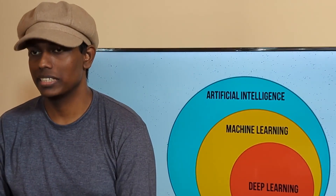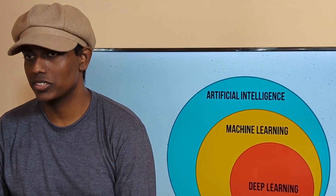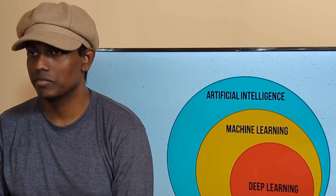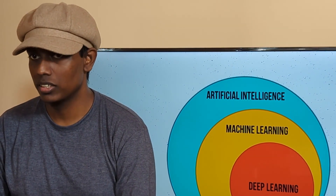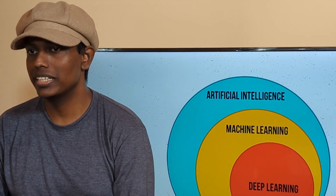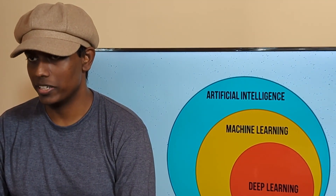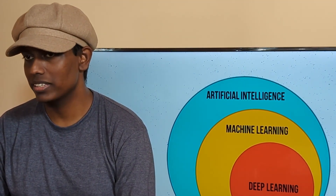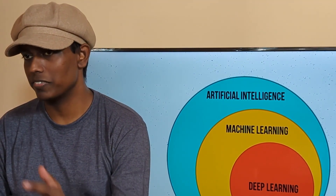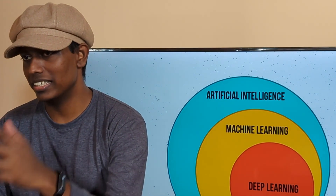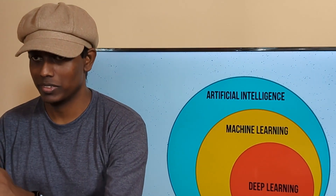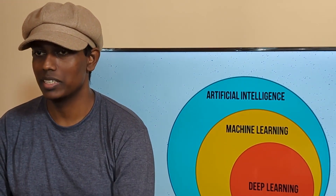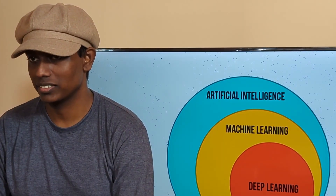AI is an umbrella term that refers to a broad field which focuses on developing machines to mimic human intelligence and behavior. ML is a subcategory of AI and DL is a subcategory of ML, which means that they both are forms of AI.